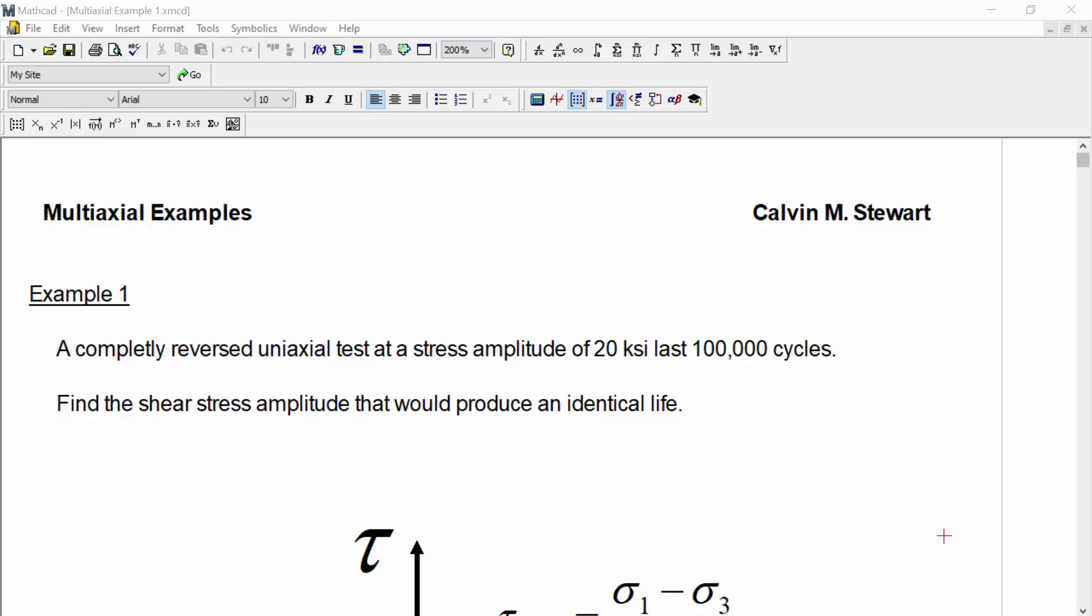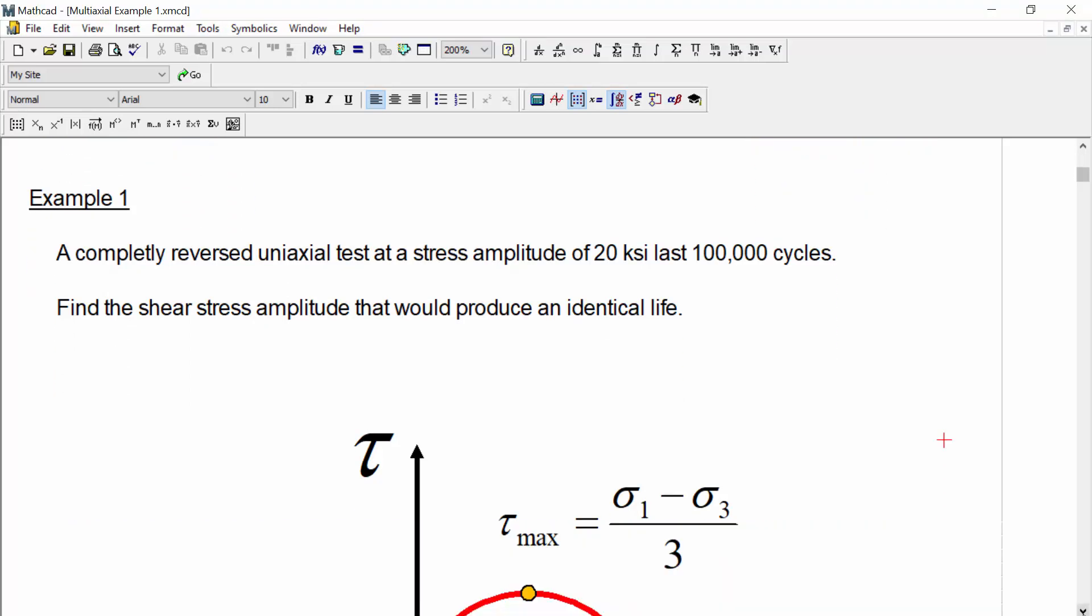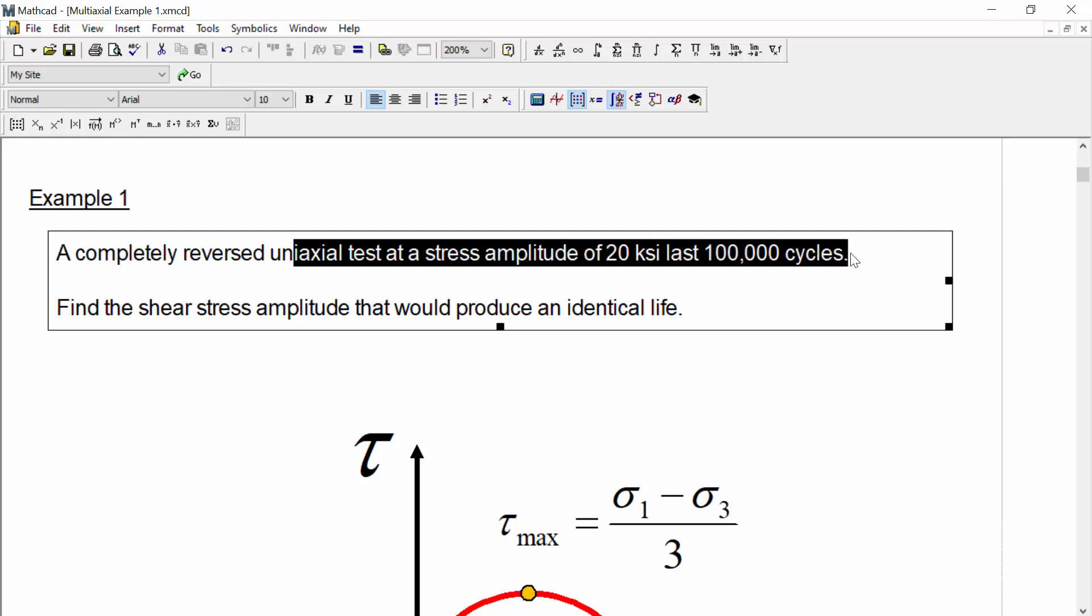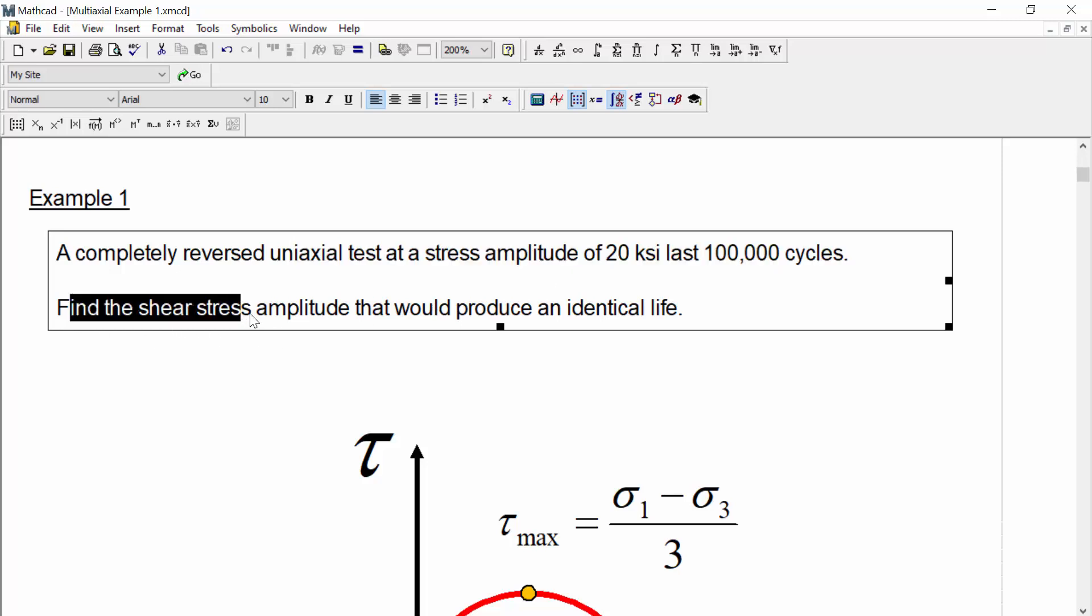Now this is example one. And in this example, a completely reversed uniaxial test at a stress amplitude of 20 KSI lasts for 100,000 cycles. Find the shear stress amplitude that would produce an identical life.